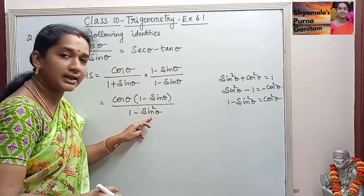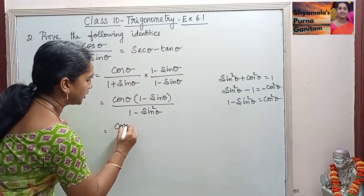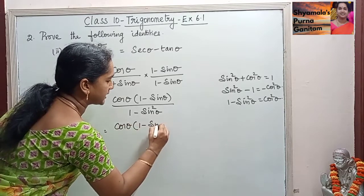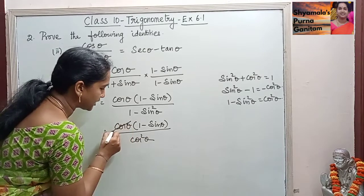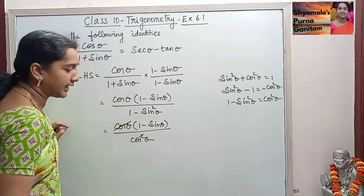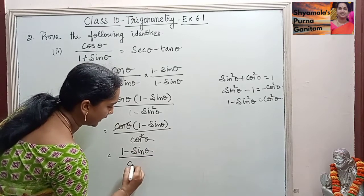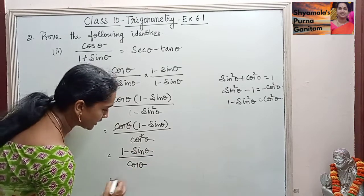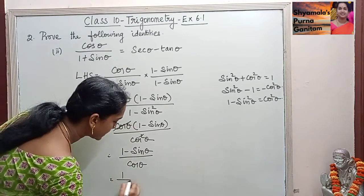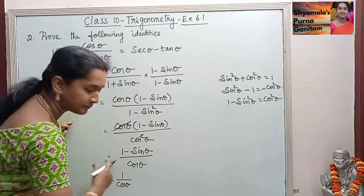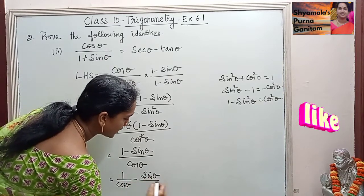Here we got 1 minus sine squared theta in the denominator, which equals cos squared theta. So we have cos theta into 1 minus sine theta divided by cos squared theta. Here, one cos theta will get cancelled, and we get 1 minus sine theta divided by cos theta. Since cos theta is common to both terms in the numerator, we can split it and write: 1 by cos theta minus sine theta by cos theta.